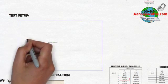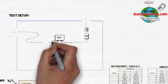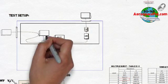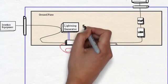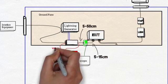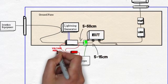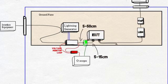The test setup for cable bundle is pretty straightforward as shown here. The current monitor needs to be 5 to 15 centimeters away from the EUT connector and the injection clamp needs to be 5 to 50 centimeters away from the current monitor. The voltage monitor is an open circuit loop around the injection clamp.